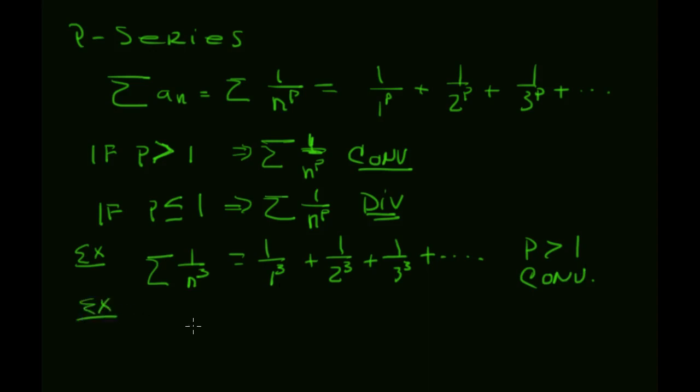And in a second example here, if I take 1 over n to the 1/3, so this is like 1 over 1 to the 1/3, plus 1 over 2 to the 1/3, plus 1 over 3 to the 1/3. This has a situation where p is less than or equal to 1, and I get divergence.